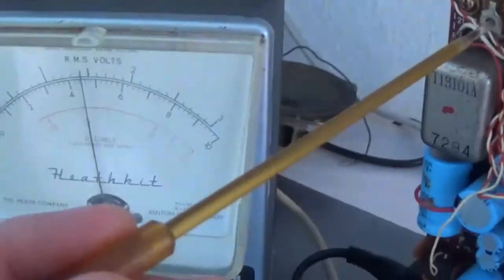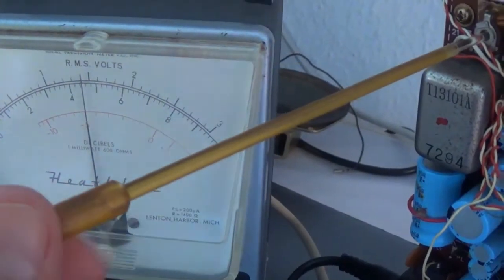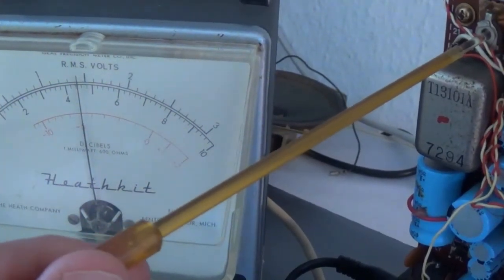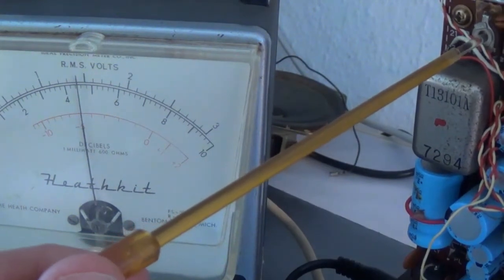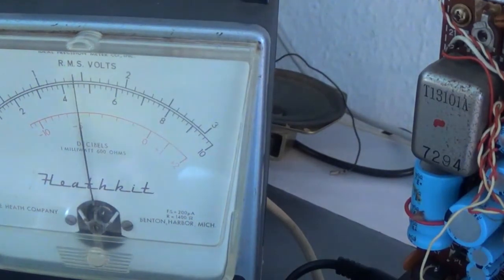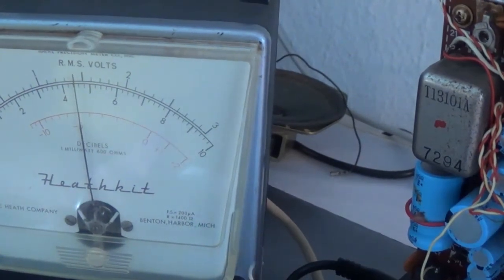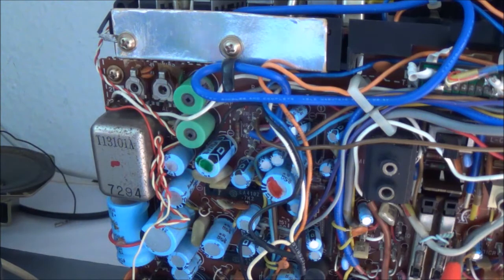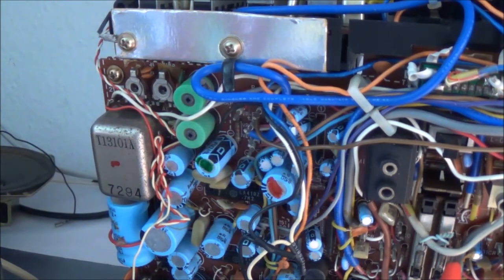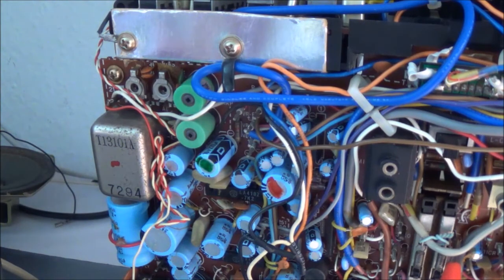I think I should just spray this with contact cleaner first. Let me shut the camera off. Okay, I got the potentiometers cleaned up. I don't exactly remember the position they were in, but I put them both in the middle now.